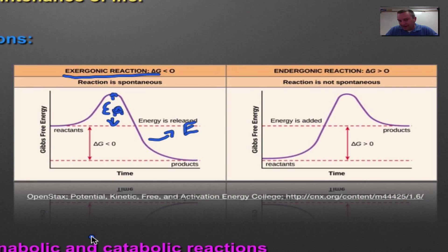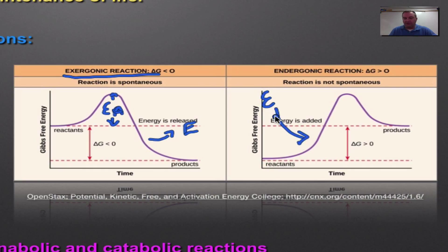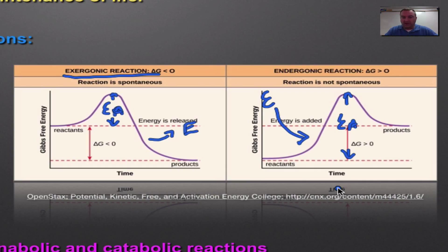An endergonic reaction is just the opposite — the activation energy is so high that it has a hard time getting started. The reactants have low energy but the products have higher energy, so energy must be added. The peak of the hump represents the activation energy, and it takes a ton of it to get this going. That's why this reaction doesn't occur on its own; it usually needs help, and in living things the helper molecule is typically an enzyme, which lowers the activation energy.